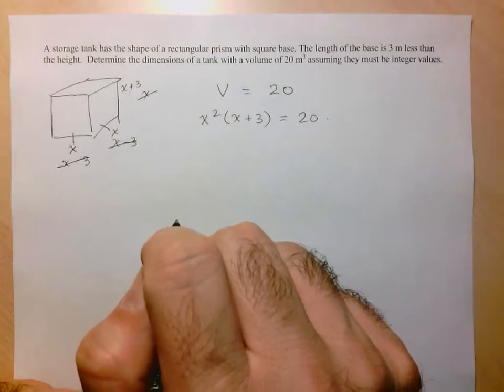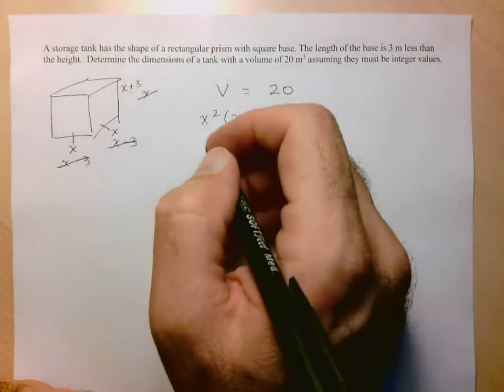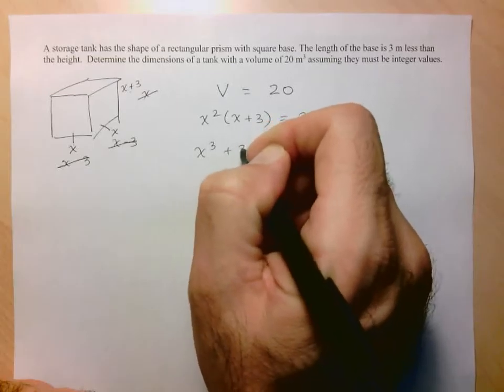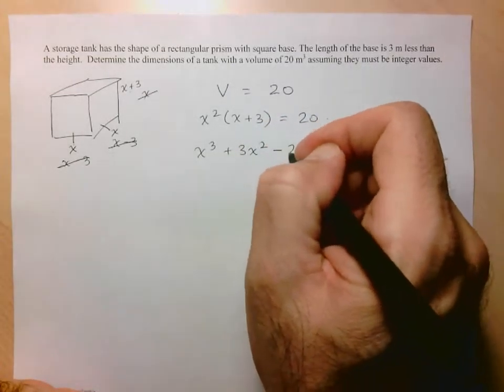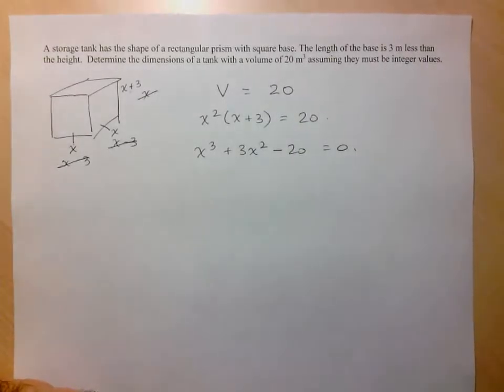Bring everything to one side of the equation and have zero on the other side. So here we've got x cubed plus 3x squared, and I'll bring the 20 to the other side of the equation, so minus 20 equals zero.